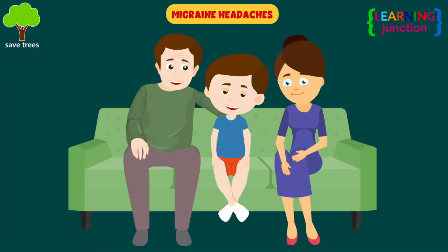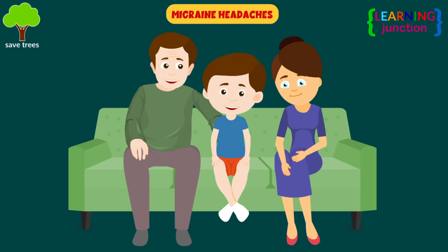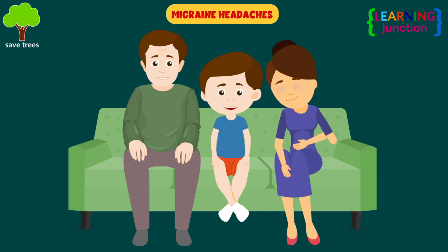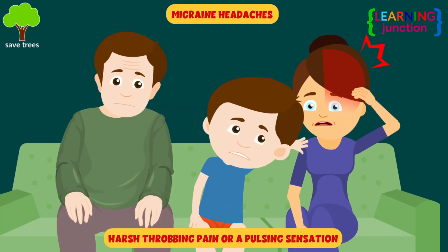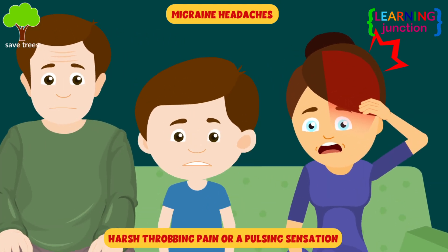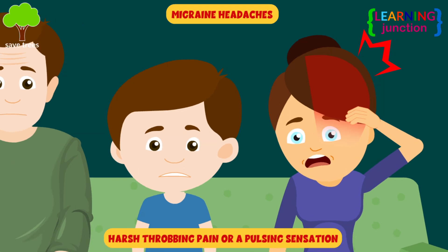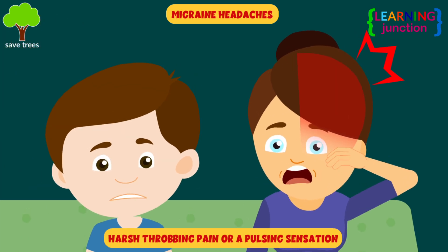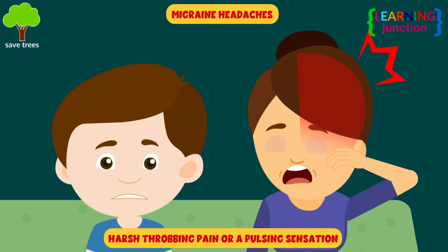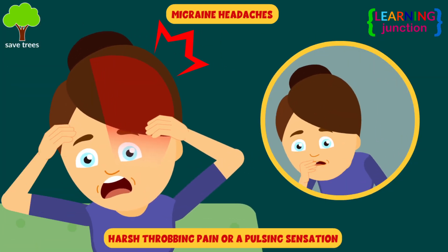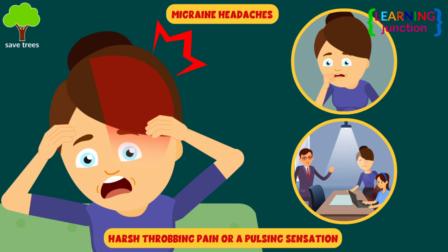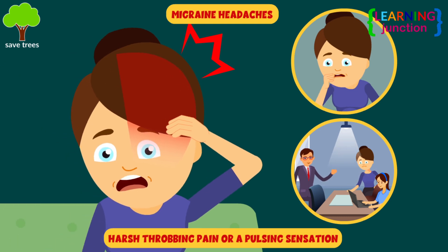Migraine headaches. This is a headache that can cause harsh throbbing pain or a pulsing sensation, generally on one side of the head. It's often accompanied by nausea and sensitivity to light and sound.